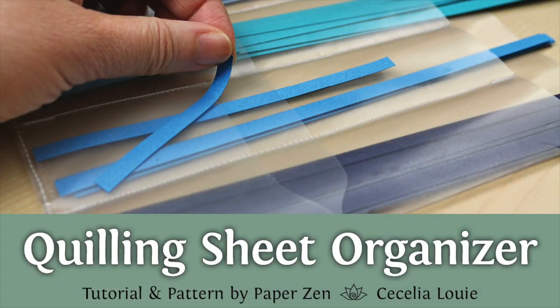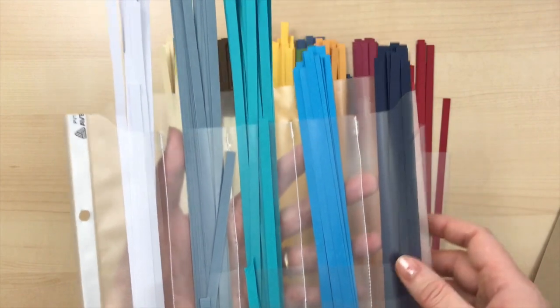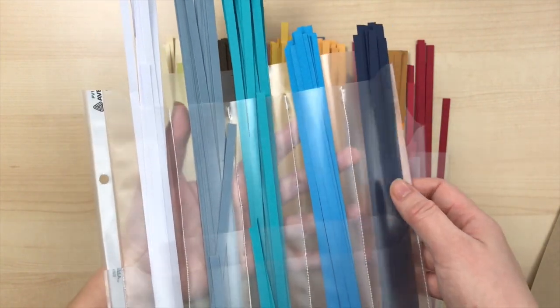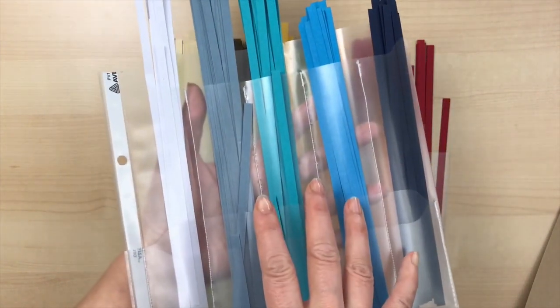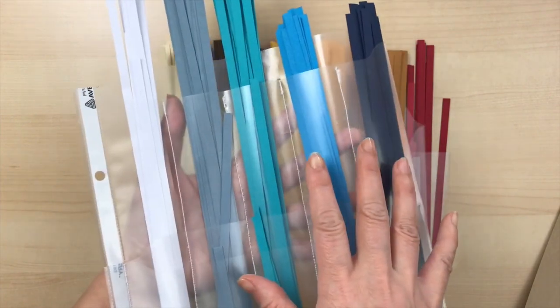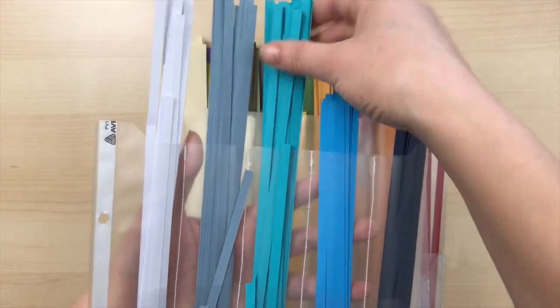In a previous video, I showed you how I organize my 11-inch quilling strips with a plastic sleeve, and I'll leave a link below if you'd like to see that. Ever since making this method, I have not wanted a different method.